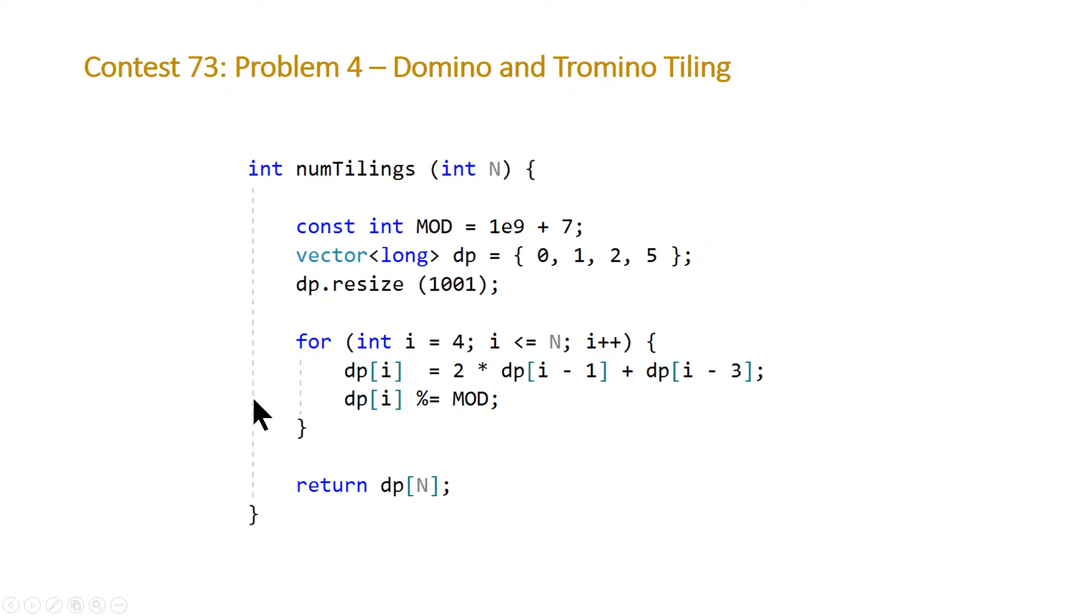And then we're just going to loop from i equals 4, which is 1 greater than we initialized our vector to using braced initialization, and then up till n. We're going to perform our calculation, which is just 2 times n minus 1, or in this case our iterator is i, plus dp i minus 3.